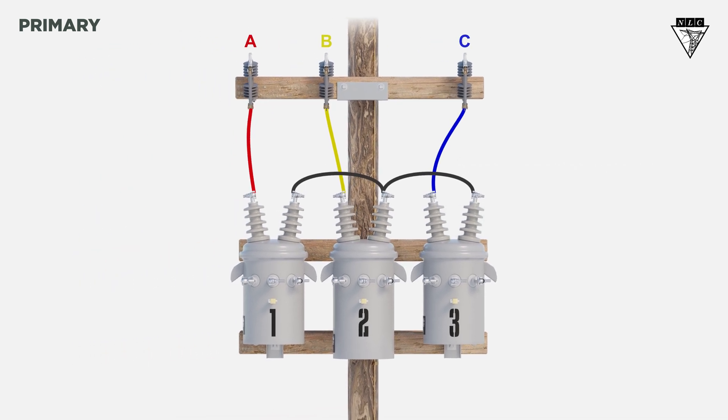Single-phase transformers with two primary bushings must be used when floating the Y-point to ensure the neutral point can adjust to the system's imbalances. Using only one primary bushing wouldn't allow this to occur.